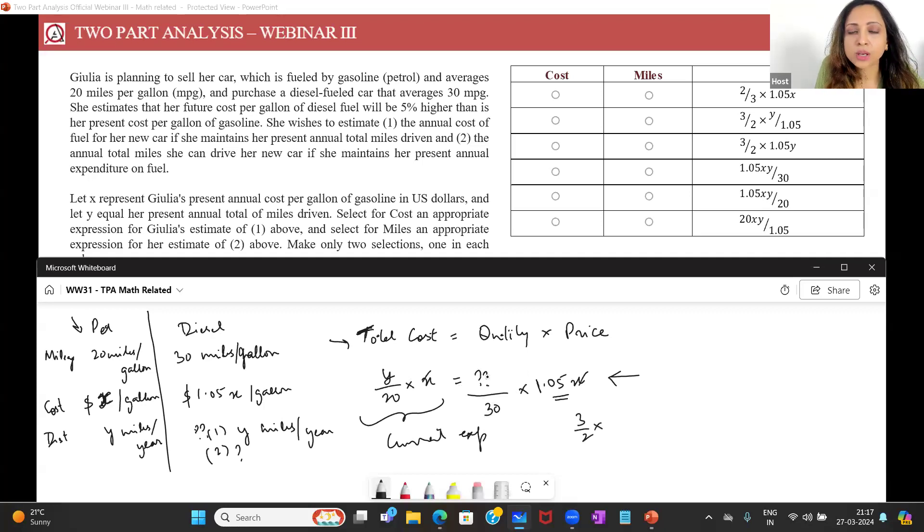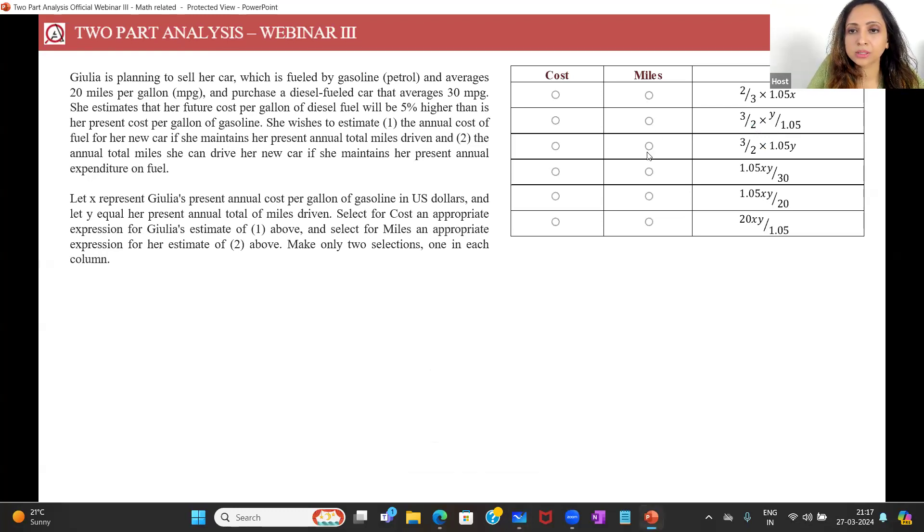I need to find this question mark. So I'll just leave this on the right hand side, take everything else on the left hand side. I have a y here already and I divide this by 1.05 and this gives me the distance. This is equal to the question mark. So this gives me the distance that she can travel with the new car. This would be my 3 by 2 into y by 1.05. So my answer over here would be this one.